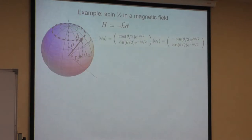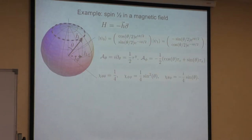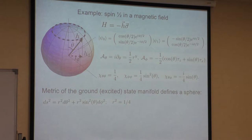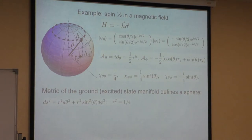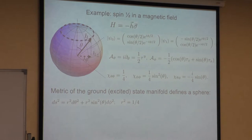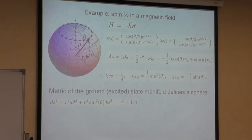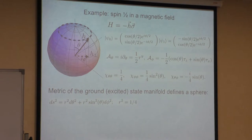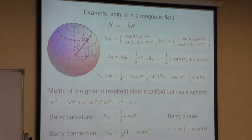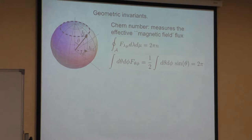Just as a reminder, we went through the example of the geometry of spin-1/2. It's a slightly different expression for the ground state wave function but defined up to a phase, so it's completely equivalent. You can do this exercise—we did it last time—and you can get the Berry curvature, the metric, and the symmetry of the sphere. Berry curvature is notorious for